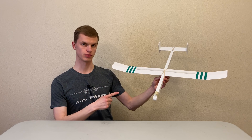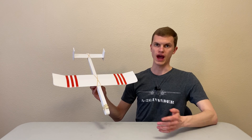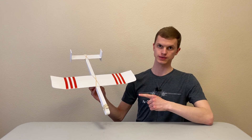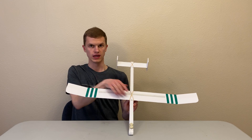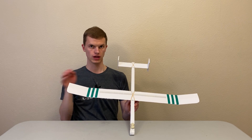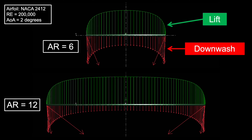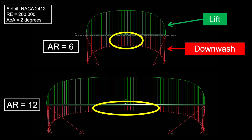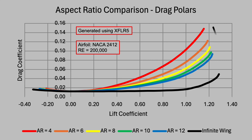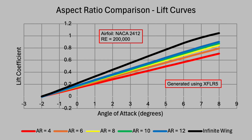Planes with high aspect ratios, like this one, have very long and skinny wings. Planes with low aspect ratios, on the other hand, have short stubby wings. A higher aspect ratio means that a greater portion of the wing is further away from the wingtip vortices, so there is less downwash in that region. In this diagram, we can see two wings viewed from the front — one with a low aspect ratio on top and one with a high aspect ratio on the bottom. The downwash, shown in red, is weaker at the center of the high aspect ratio wing. In the drag polars, we can see how increasing the aspect ratio reduces the drag coefficient, and in the lift curves, we can see how increasing the aspect ratio increases the slope of the lift curve as well.